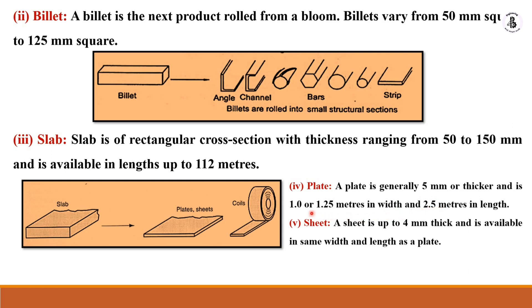For sheets, up to 4 mm thick and available in the same width and length. Basically, plates and sheets have differences with respect to thickness. Plates have more thickness than sheets.